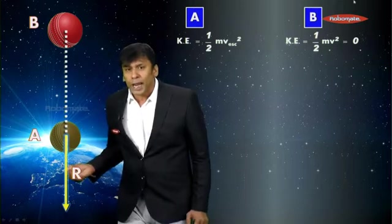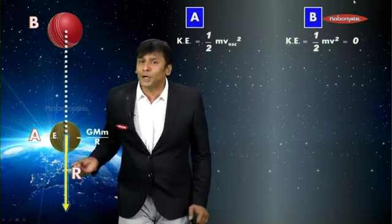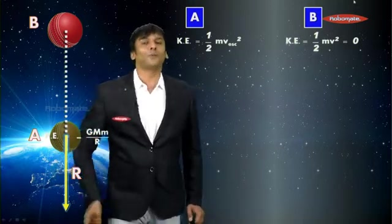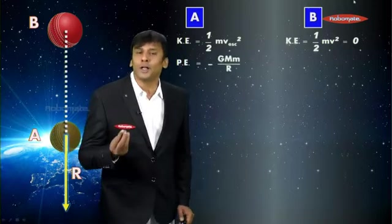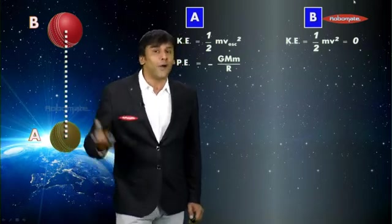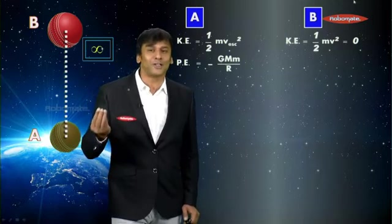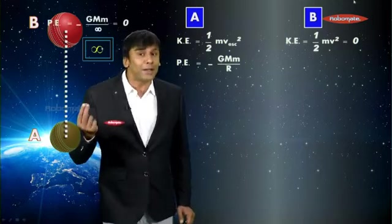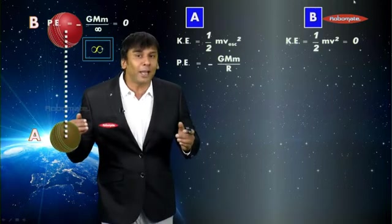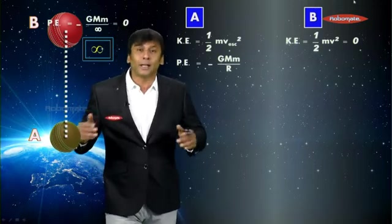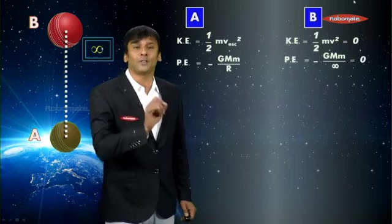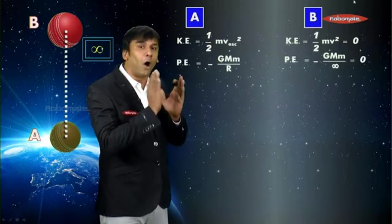Now let's find the potential energy. Potential energy depends on the distance from the center of earth. Position A is at a distance R, so the potential energy here will be −GMm divided by R — minus because gravity is acting in the opposite direction. The ball went to infinity, so position B is at an infinite distance. The potential energy at B will be −GMm divided by infinity. Any number divided by infinity gives zero, so potential energy at B is zero.